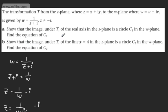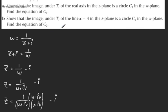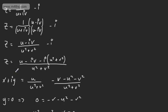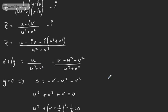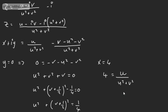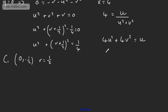In the next part, we need to show that the image under T of the line X equals 4 in the Z-plane is a circle C2 in the W-plane, and find the equation of C2. This time we have the line X equals 4. Using the real part expression from before, X equals U over U squared plus V squared, so setting X equal to 4 gives 4 equals U over U squared plus V squared. Multiplying both sides by the denominator: 4U squared plus 4V squared equals U.